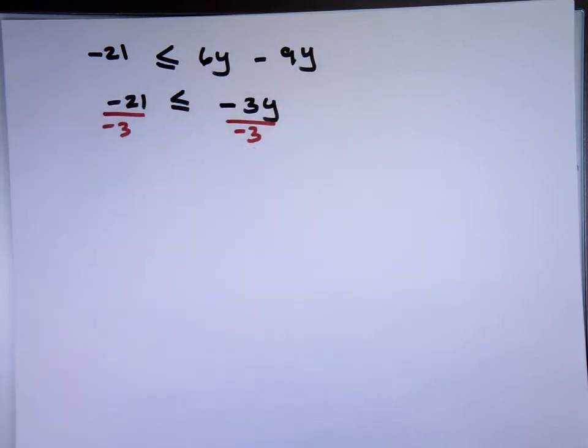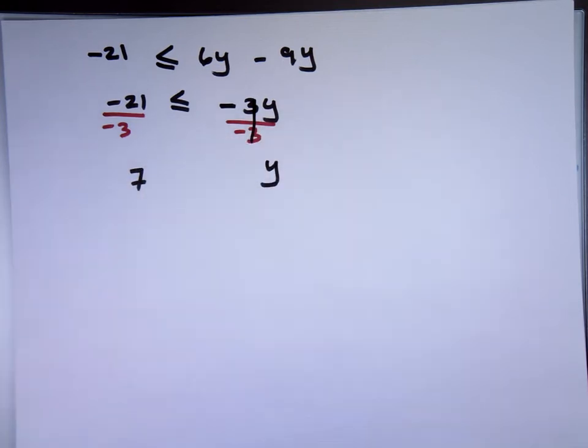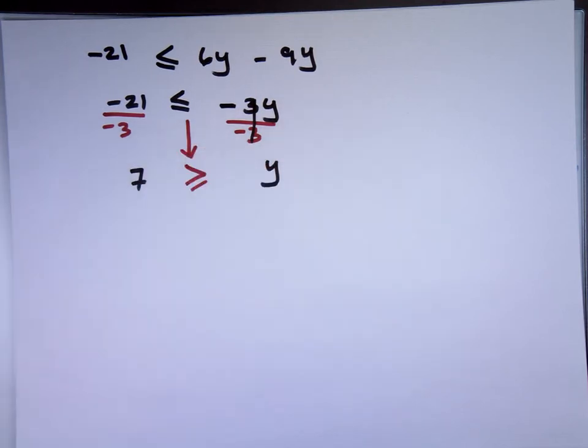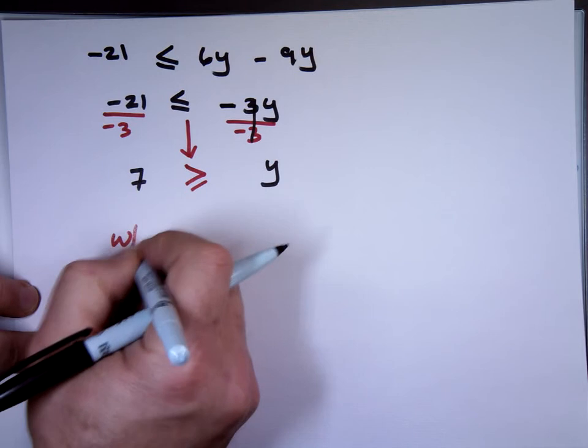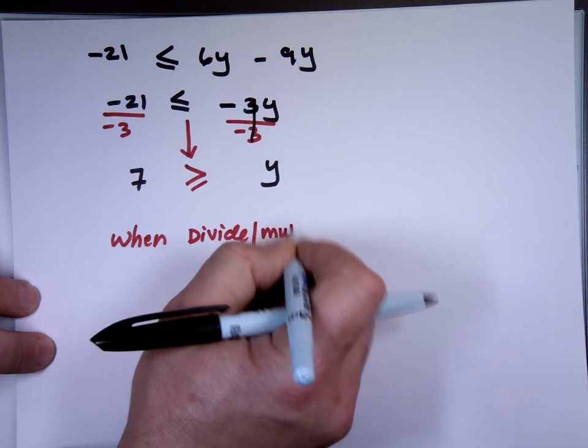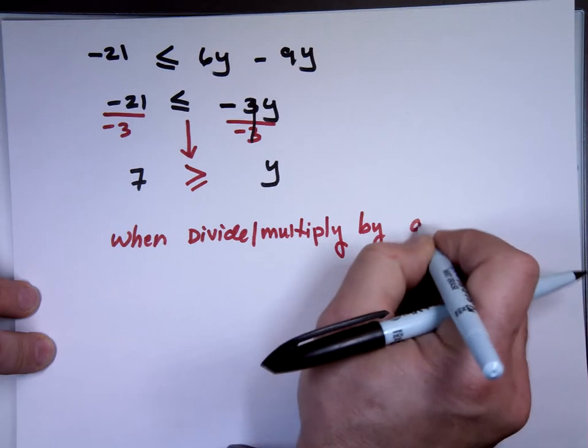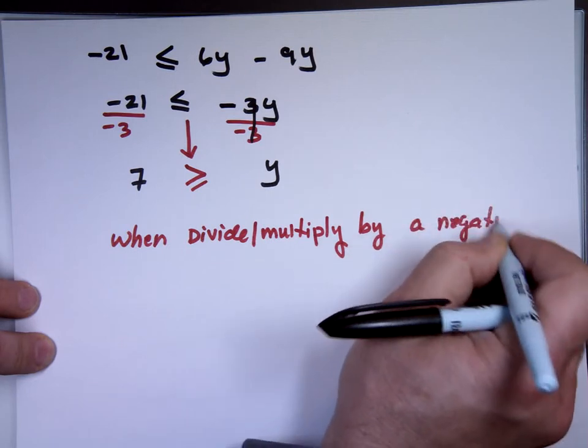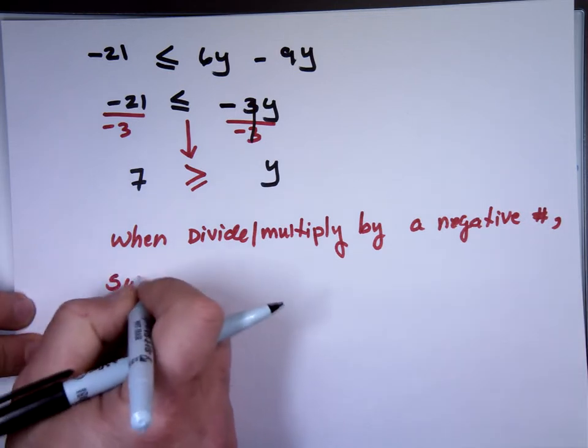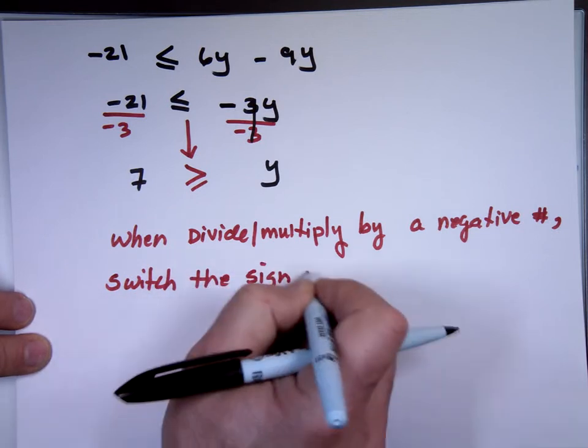What's negative 21 over 3? 7. And this will be what? Y. Notice what I'm going to write. I switch the sign. When divide or multiply. By a negative number.